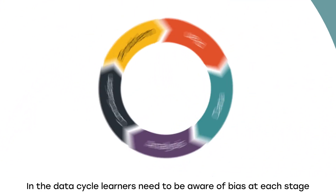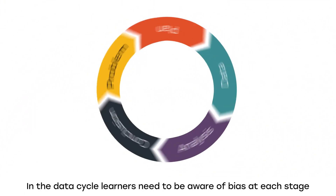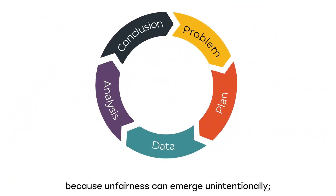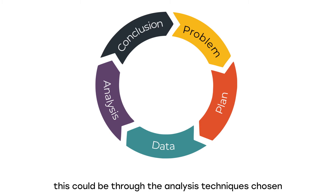In the data cycle, learners need to be aware of bias at each stage because unfairness can emerge unintentionally. This could be through the analysis techniques chosen or errors in the original dataset.